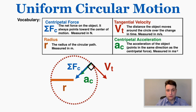The tangential velocity is the distance the object moves around the circle over the change in time, measured in meters per second. The radius of the circle is the radius of the circular path, measured in meters. The centripetal acceleration is the acceleration that points toward the center — because acceleration always points in the same direction as the net force, in circular motion the acceleration is always pointing toward the center of the circle.